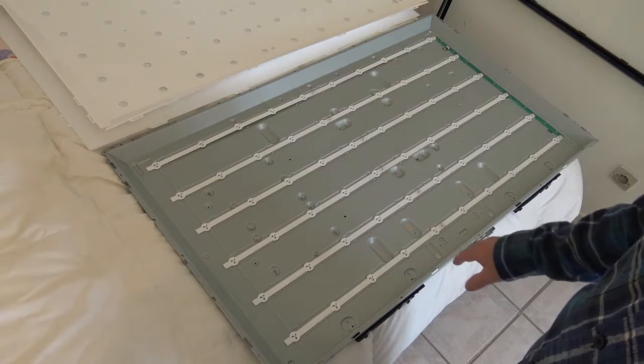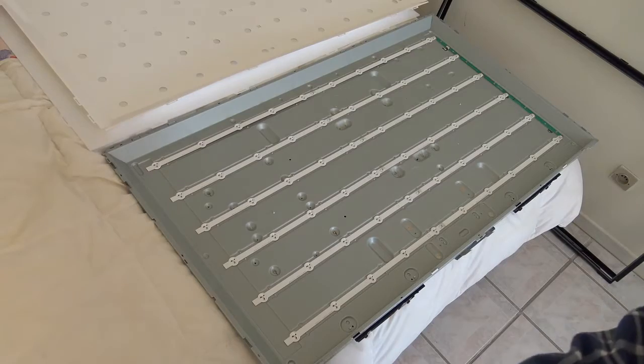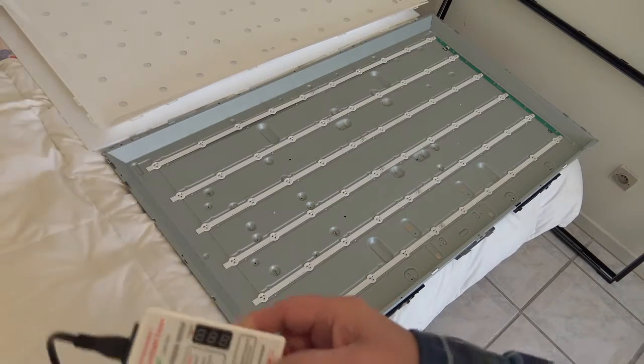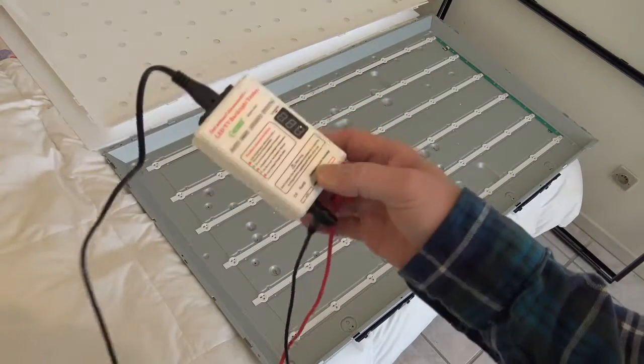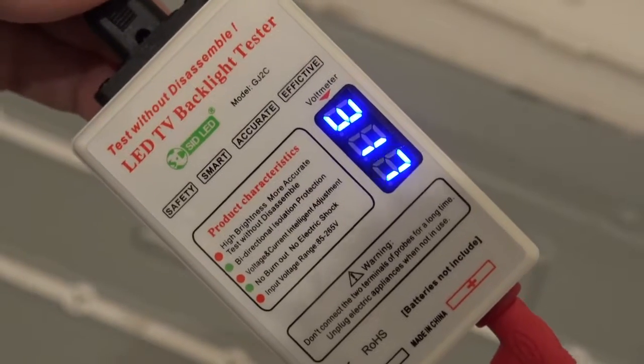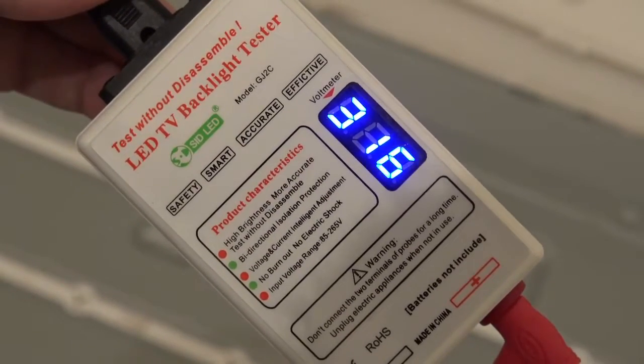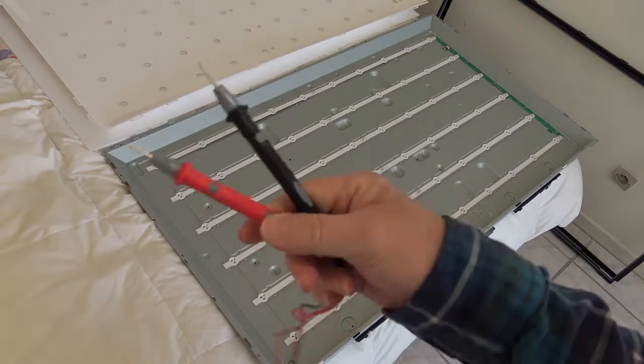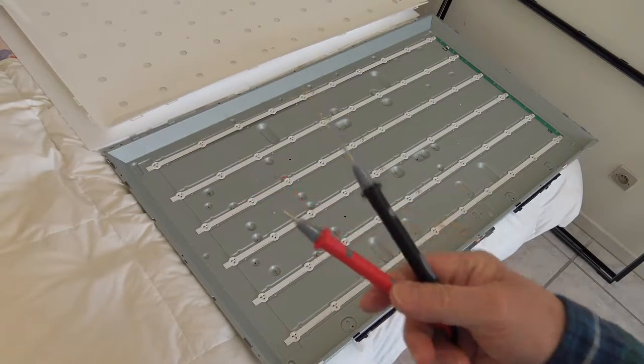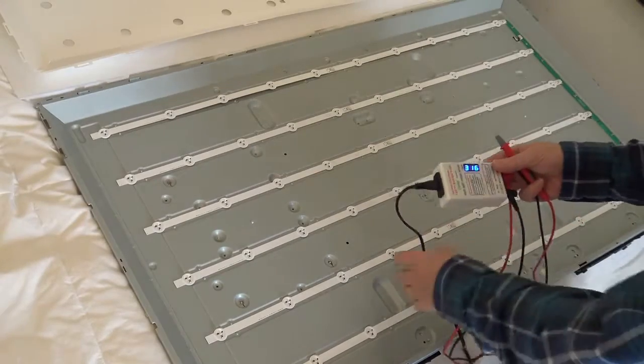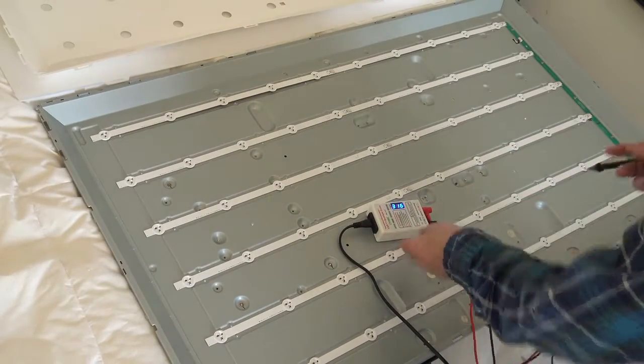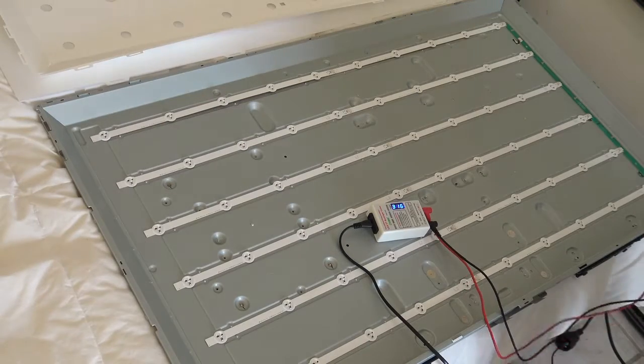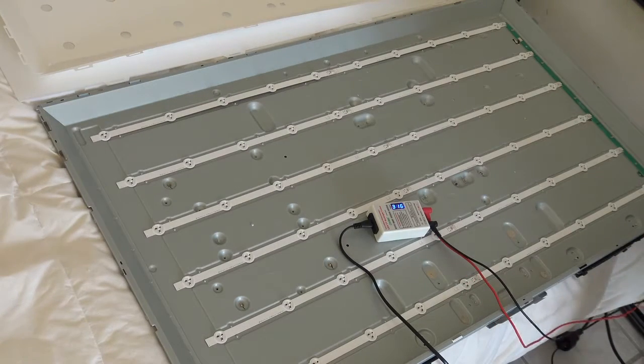Now I'm going to test the LEDs. You need to buy one of these - I got this on eBay for about 30 pounds. Plug this in the mains and here are the testing probes. Plug the tester in, leave it for a couple of minutes, and then each row is marked plus and minus.